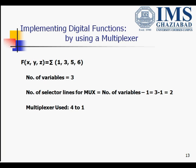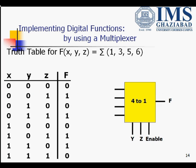Here we have minterms m1, m3, m5, and m6 as high. The truth table for this function: since we have three variables, eight possible combinations are there, and the function value is 1 for minterms m1, m3, m5, and m6, and for all others the function value is 0.